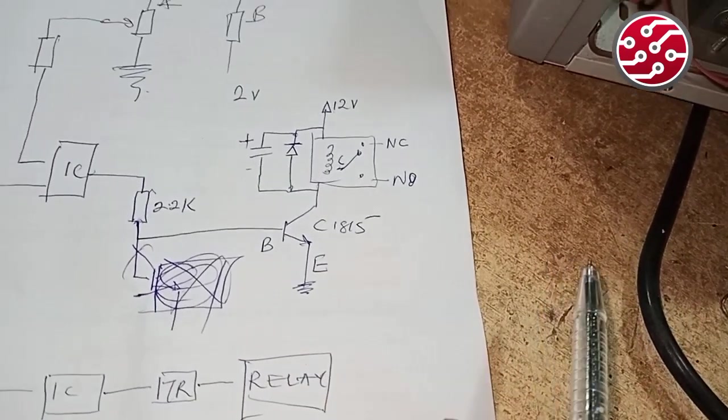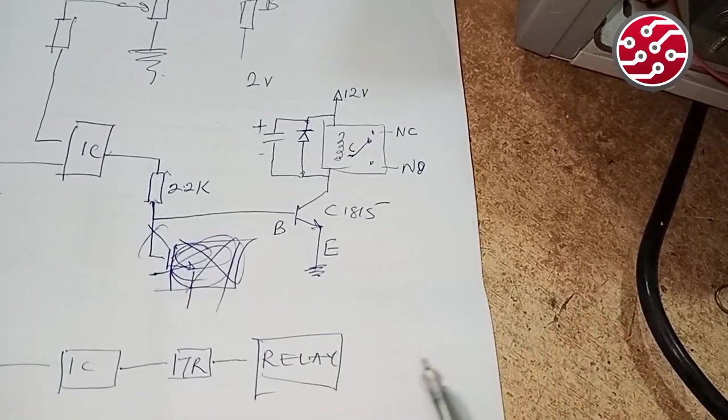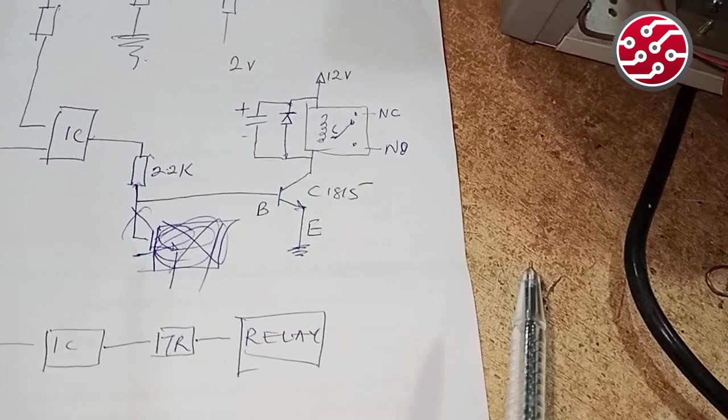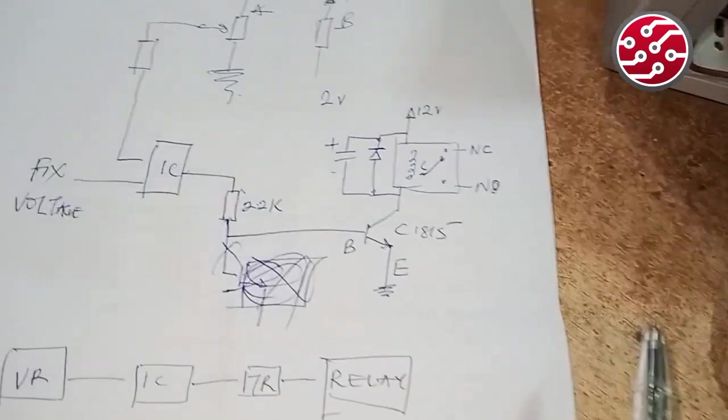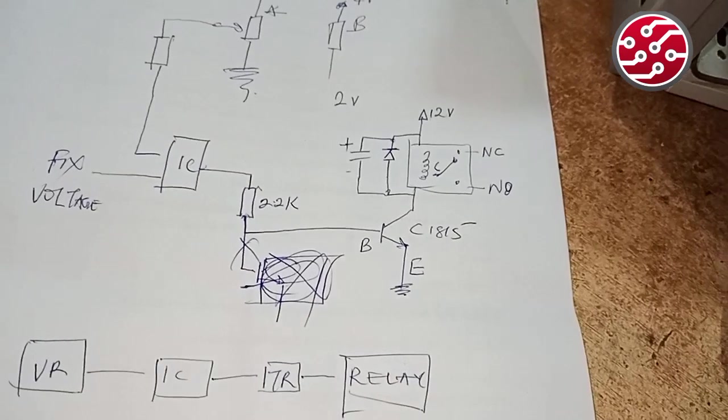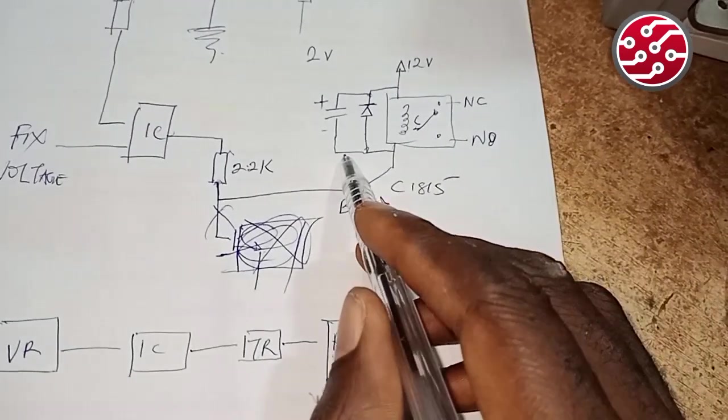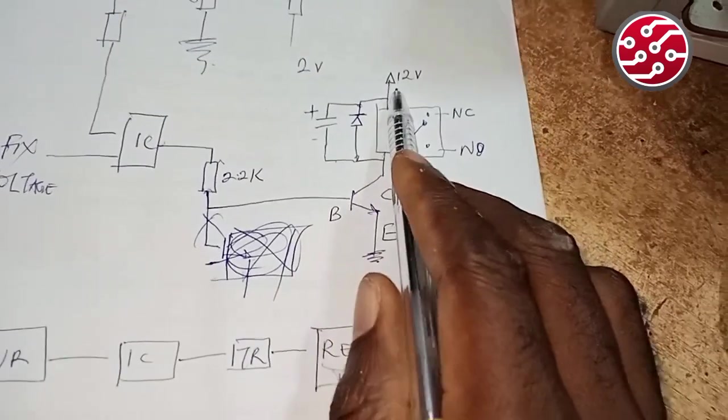Especially when there's a difference in voltage for it to switch, it won't switch effectively. You'll be hearing the relay making noise, which is not ideal. So this will help in allowing the voltage to flow only in one direction.